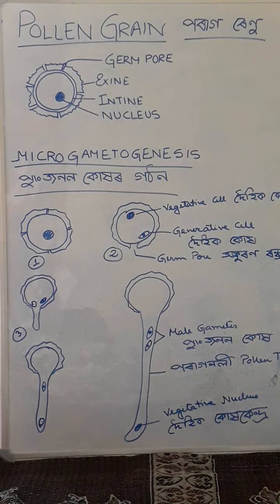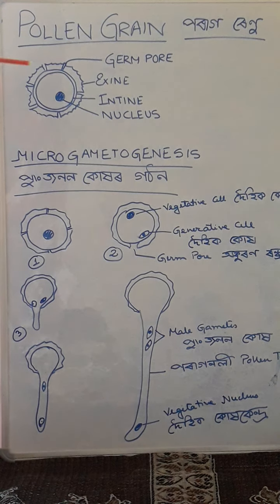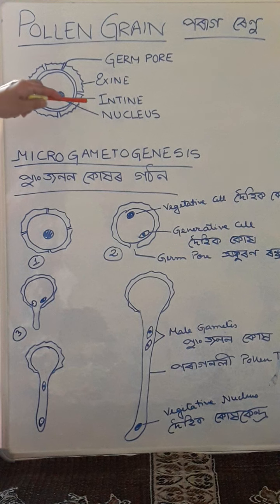The pollen grain structure has two layers. The outer layer is hard and spiny — that particular layer is known as the exine. The other layer is transparent, and that layer is known as the intine.